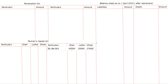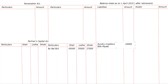Any adjustment on sundry creditors? The amount is 20,000. Next, bills payable — how much? Four thousand.